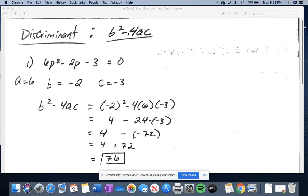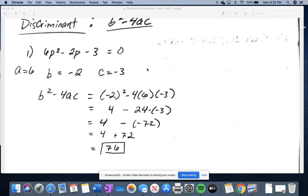Now since we're doing b squared minus 4ac, we need to identify what a, b, and c are. And just like before, it's just the coefficients. So a is 6, b is negative 2, and c is negative 3.